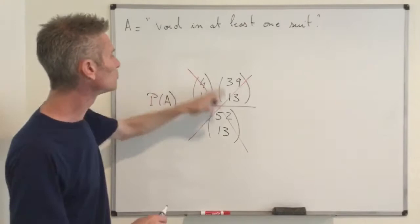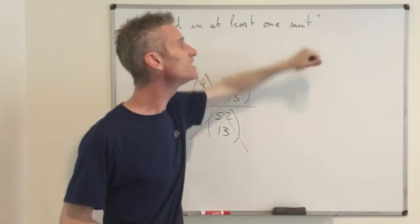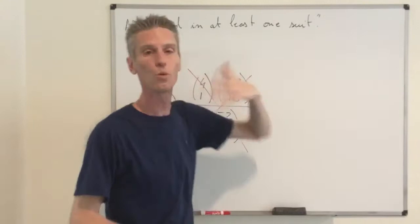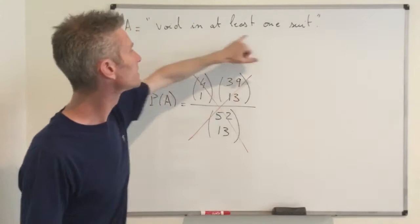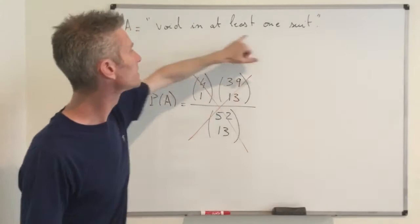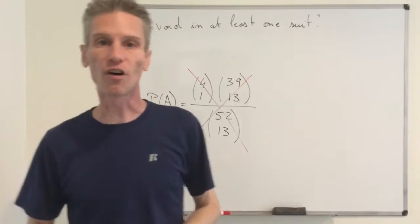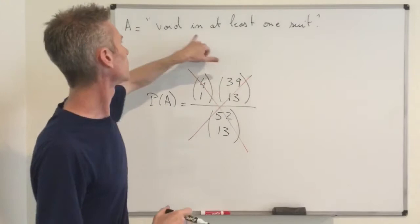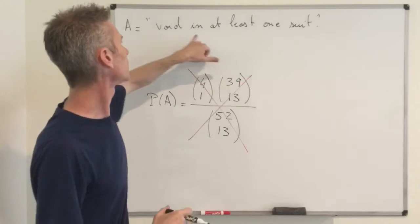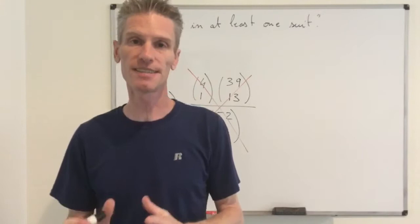That's why this probability is not equal to that expression. The event A — void in at least one suit — is exactly the union of four events: void in suit 1, or suit 2, or suit 3, or suit 4. To compute the probability of a union of events it's very convenient to use the inclusion-exclusion identity.